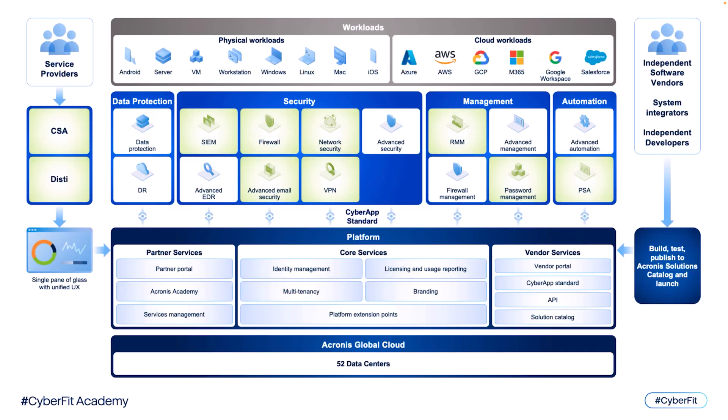Let's look at a graphical illustration of how this works. We have Acronis Cyber Platform which hosts a number of services that MSPs use. But service providers need more — they need integrated products for a single pane of glass and consolidated operations. That's where vendor services and Cyber App come in the picture. Vendors build the integration and request deployment on the Acronis Cyber Platform. Cyber App becomes available for partners in the Acronis Cyber Platform, and partners can now manage the vendor's service on the customer's workloads in the Acronis Cyber Platform.